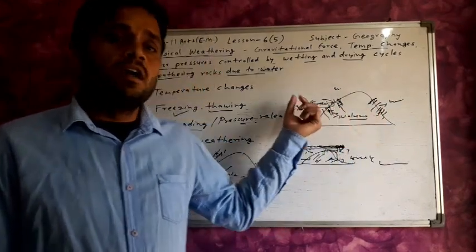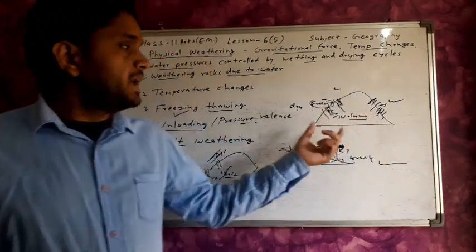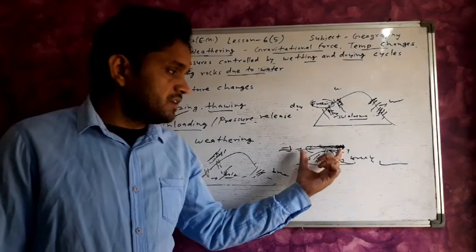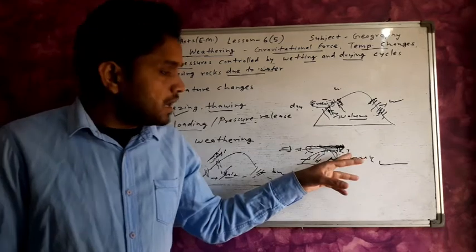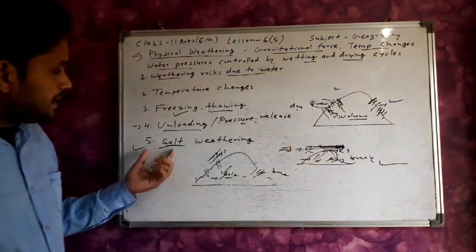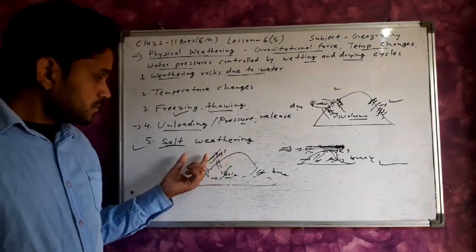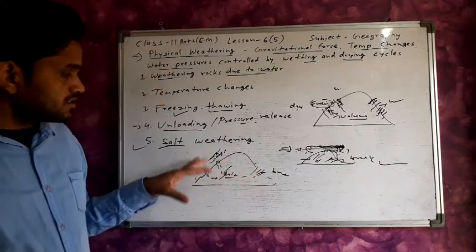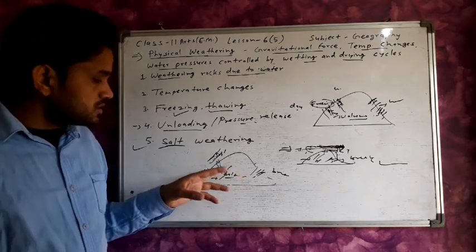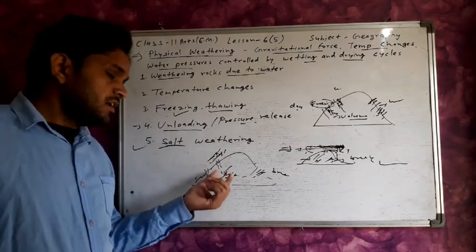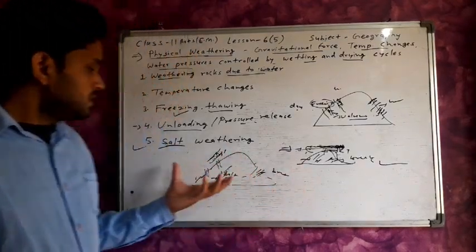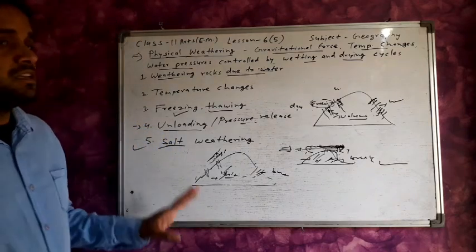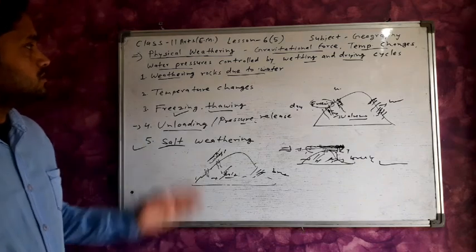After freezing, the ice starts to melt the next day, increasing volume and widening cracks. Then unloading and pressure release — decreasing pressure on the upper layer causes rocks to break. Finally, salt weathering — soluble water in the cracks dries and forms salt, increasing volume and causing weathering. All these processes involve only physical features, with no chemical processes involved — so these are all known as physical weathering.